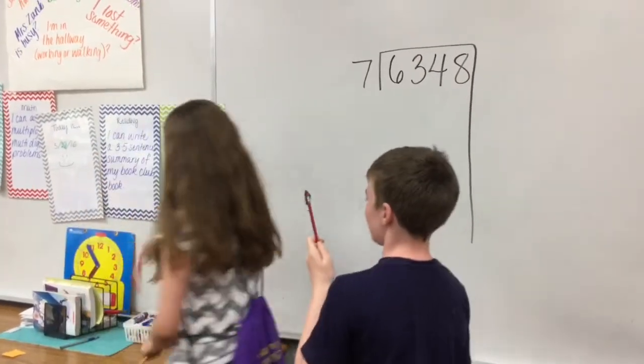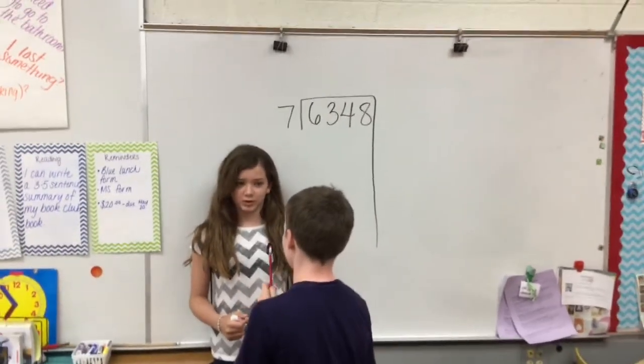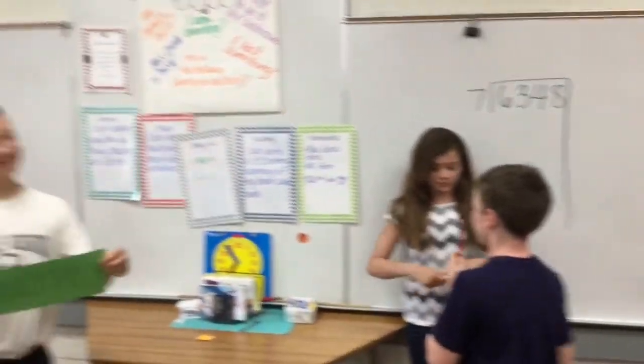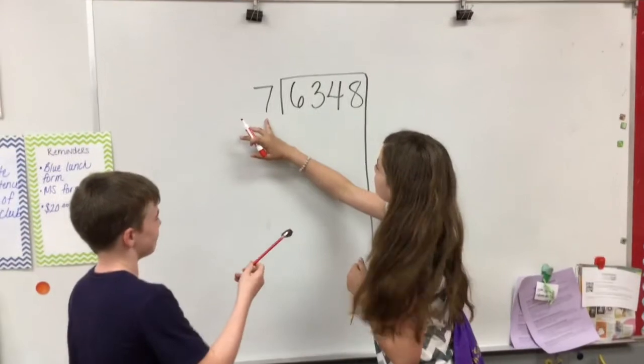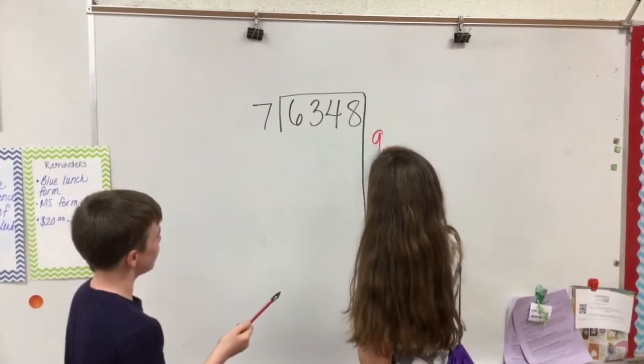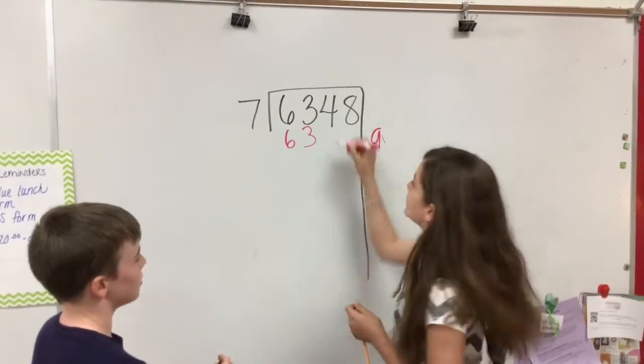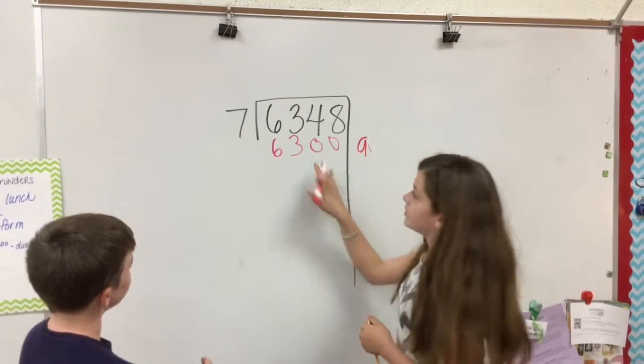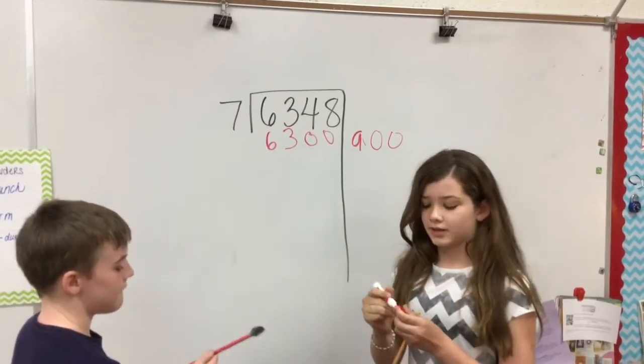So first, what do you do first? We multiply. So you are right, seven goes into 63 nine times. So you put the nine over here and then you put 63 right here. You would add two zeros, and then since you added two zeros over here, you add two zeros over here, and that is the first step.